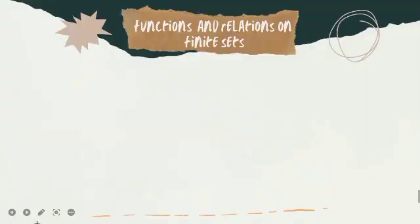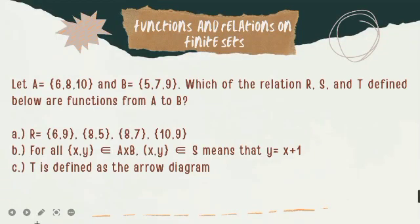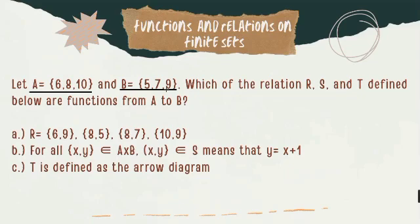Now let us proceed on functions and relations on finite sets. For letter A, we have given 6, 8, 10 — these are all the elements of A. And for letter B, we have 5, 7, 9 — these are the elements of B. The question is: which of the relations R, S, and T defined below are functions from A to B? So these three will be our guide questions.